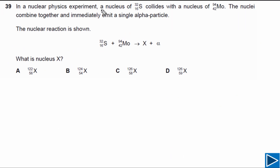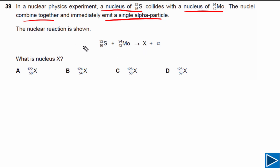For this question, it is given to us that a nucleus of sulfur collides with the nucleus of molybdenum. The nuclei combine together and they emit a single alpha particle, and the nucleus X is formed, as you can see by this nuclear reaction.